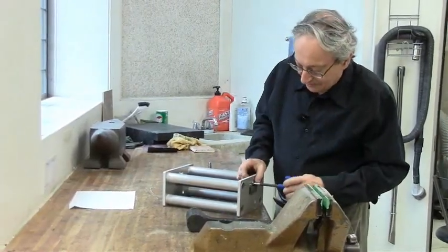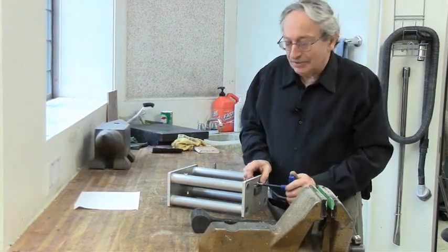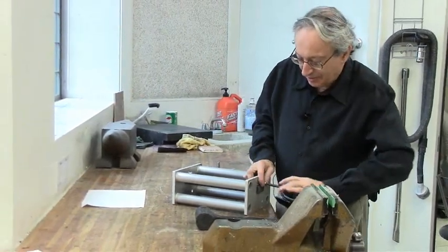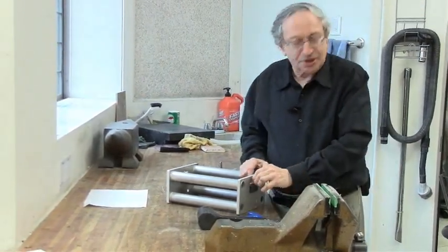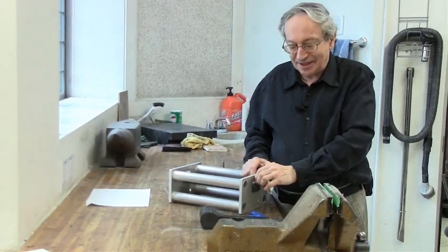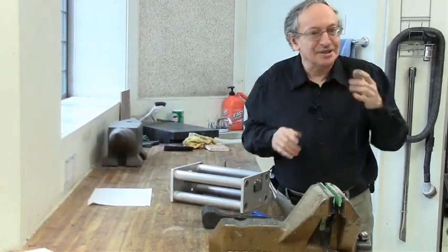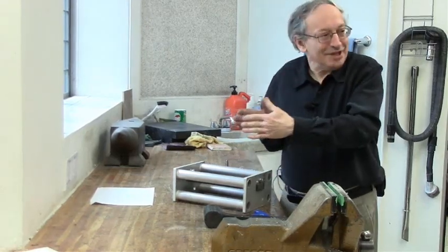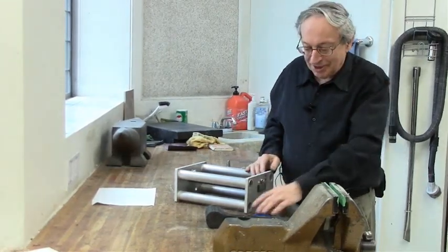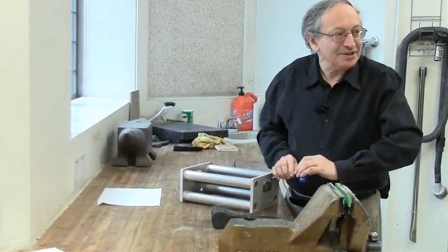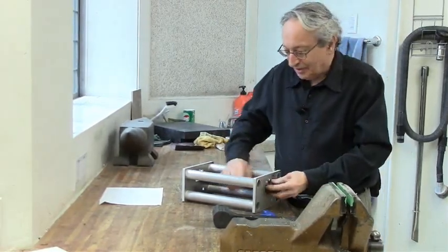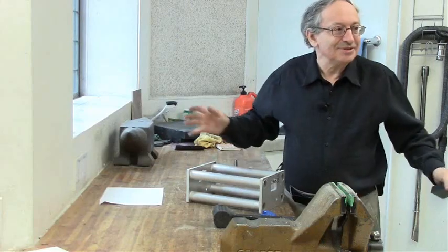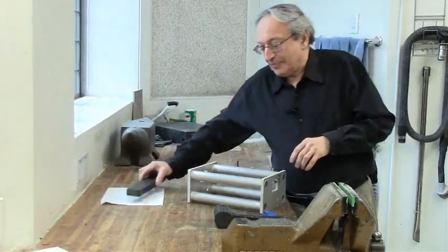You get a huge leverage here because that thread angle is less than two degrees. So you get the leverage of the thread plus the leverage of the wedge. You can generate many tons of force just by one turn. And once you loosen it, it's completely loose.